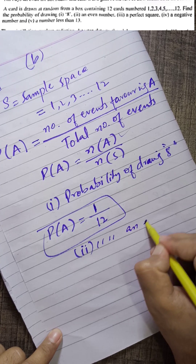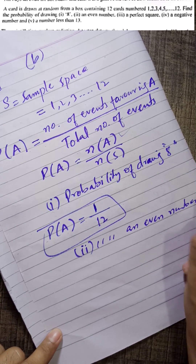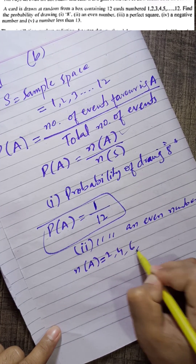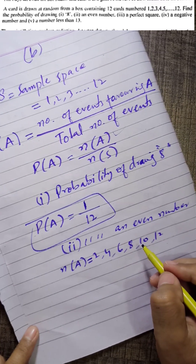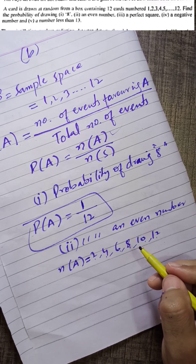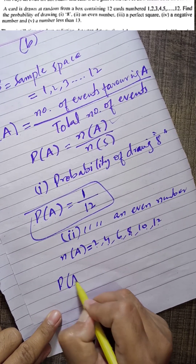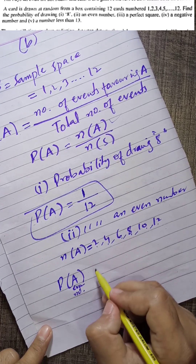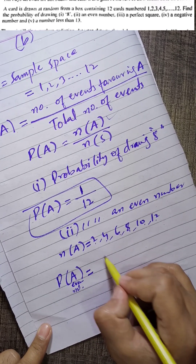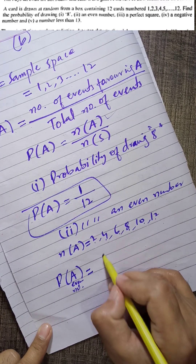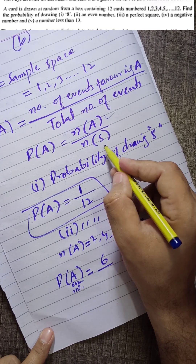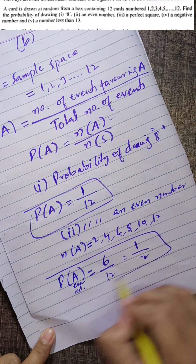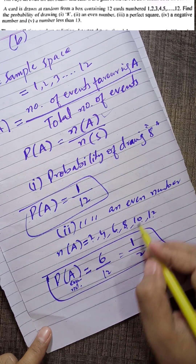Second: the probability of drawing an even number. The even numbers from 1 to 12 are 2, 4, 6, 8, 10, and 12 — that is 6 even numbers. So the probability of drawing an even number is 6/12, which simplifies to 1/2.